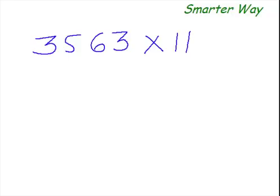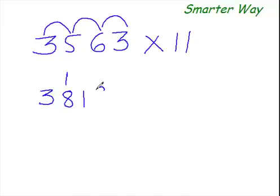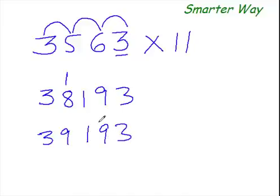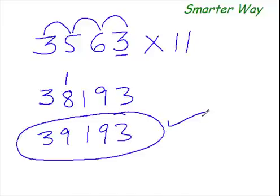Let's do it one more time. I know you are enjoying this. So, what would be 3563 times 11? Copy the first digit as it is. Next digit would be 3 plus 5 that is 8. Now, 5 plus 6 is 11. But 11 is a two digit number. Then what do we do? Simple. Just carry forward 1 here. Write 1 here. Now, 6 plus 3 is 9. And copy this 3 as it is. So, the answer would be 38 plus 1 is 39,193. This is your answer. See?